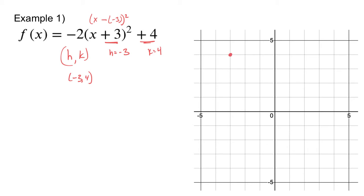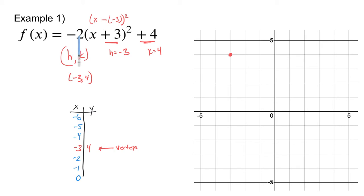So my vertex is at negative 3 comma 4. Now, because we know all about symmetry, we know the vertex goes right in the middle of our table. So negative 3 being the vertex, I can number up and number down — going from negative 6 to 0. I'll plug in negative 2: negative 2 times the quantity of negative 2 plus 3 squared plus 4. Negative 2 plus 3 is 1, 1 squared is 1, times negative 2 is negative 2, plus 4 gives me 2 as that coordinate pair.